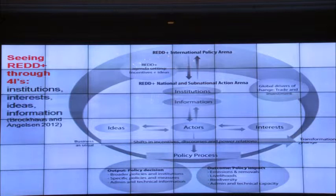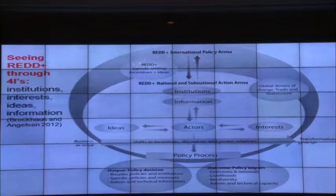The way to achieve these outcomes is through the four I's — ideas, interests, which influence how actors make decisions and act on their resources; information, which research can contribute to; and institutions, which frame the national policy framework. In the case of REDD, this national policy framework exists not just within the country, but within the global context of international negotiations.